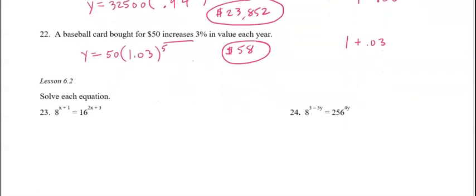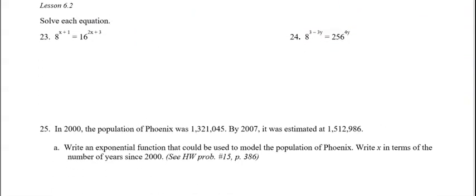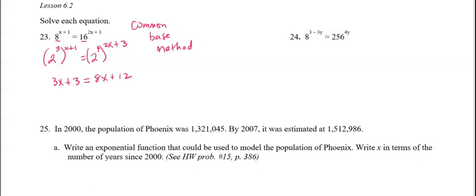Alright. Number 23 is material from Lesson 6-2. And this is using the common base method. Meaning that these two bases, 8 and 16, had to be rewritten so that they're the same. It's a base that has to equal 8 and equal 16. A base of 2 will do that because 2 to the 3rd is 8 and 2 to the 4th is 16. So my common base in this particular problem is going to be 2. And then once you get common bases, just think the left exponent after distributing equals the right exponent after distributing. And now you just solve for x like you have many times in the past. Subtract 3x. Subtract 12. And divide by 5. And your answer will be negative 9/5.